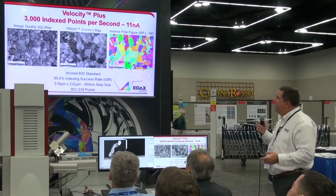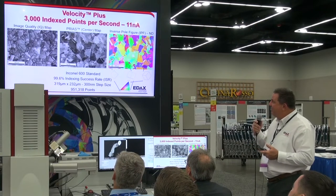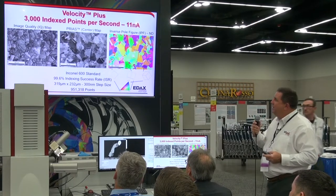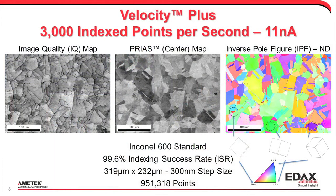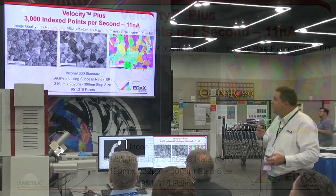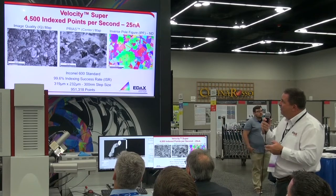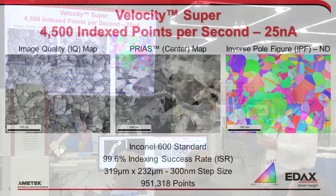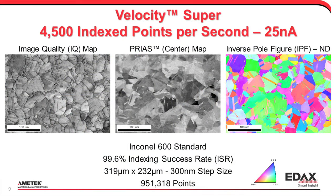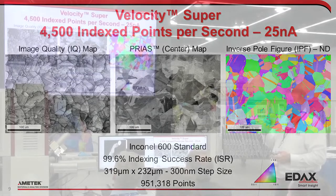The Velocity Plus at 3,000 index points per second, at about 10 nanoamps, achieves essentially 100% indexing success rate. The pattern quality map on the left shows grain contrast caused by sharpness of diffraction patterns. The middle image is from our Prius technology, showing orientation changes. On the right, the orientation maps show color corresponding to crystallographic orientation. We can jump to the Velocity Super — 4,500 index points per second at about 25 nanoamps, again achieving close to 100% indexing success rate. This is an Inconel 600 nickel superalloy sample.